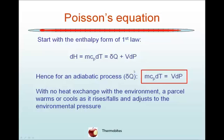Poisson's equation describes the motion of a parcel of air moving through the atmosphere undergoing an adiabatic process, that is, δQ = 0.